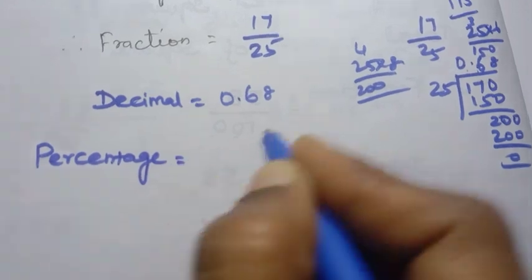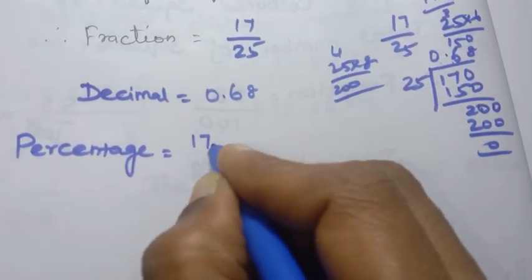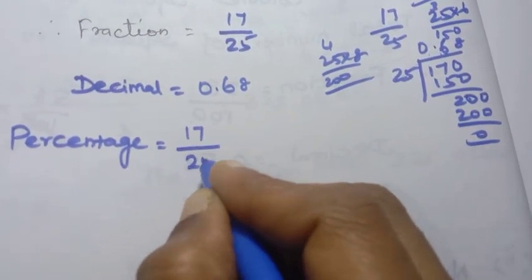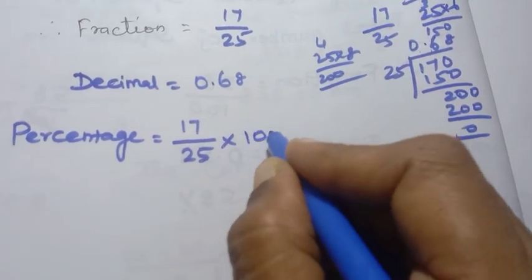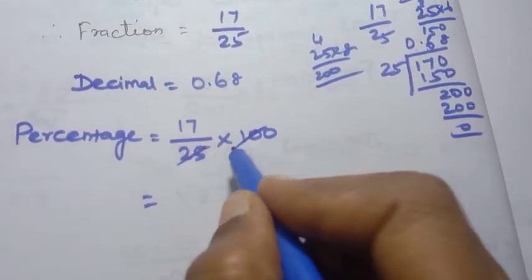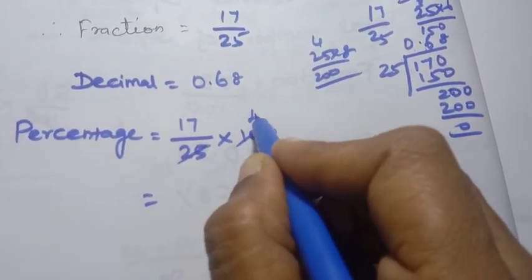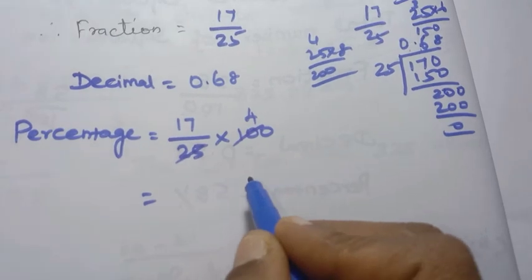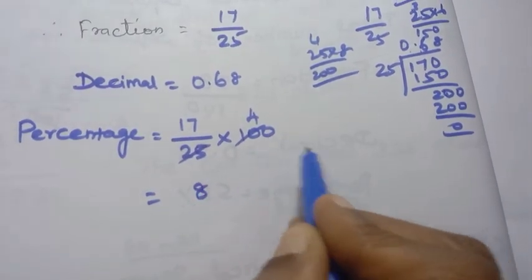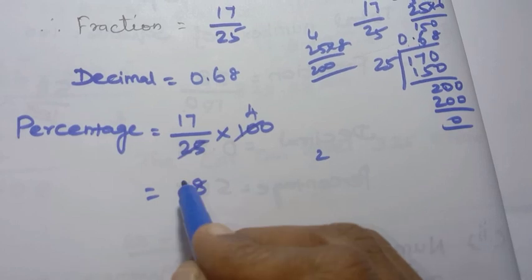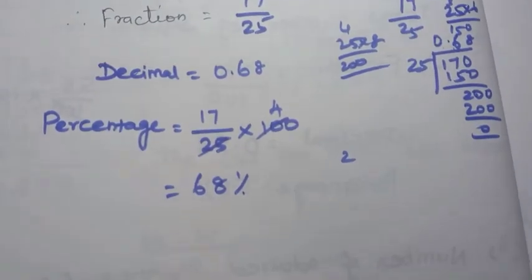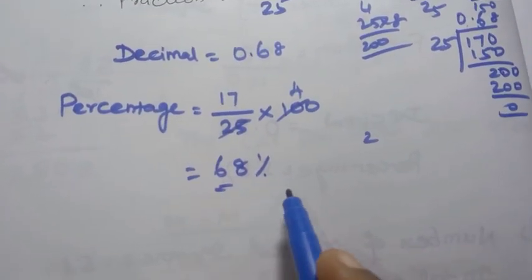For percentage: shaded/total × 100 = 17/25 × 100. 17 × 4 = 68, so the percentage is 68%.